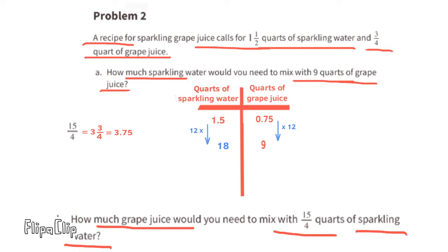15 fourths means 15 divided by 4, which equals 3 and 3 fourths, or 3 and 75 hundredths. In the left-hand column we can put 3.75. I noticed that the left-hand column is twice the size of the right-hand column — for example, 18 divided by 2 equals 9, and 1.5 divided by 2 equals 0.75. So 3.75 divided by 2 gives 1.875 quarts of grape juice to mix with 15 fourths quarts of sparkling water.